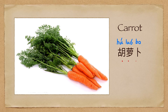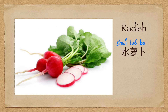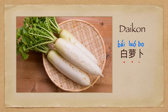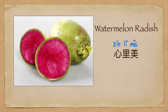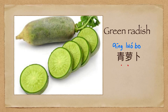胡萝卜 (carrot). 水萝卜 (water radish). 白萝卜 (daikon radish). 心里美 (red-heart radish). 青萝卜 (green radish).